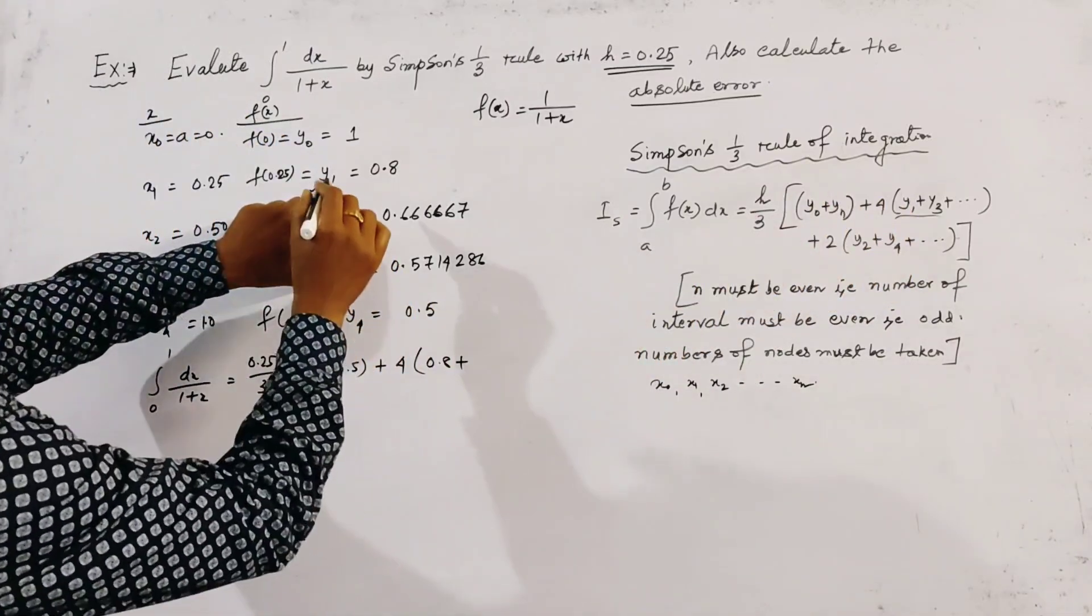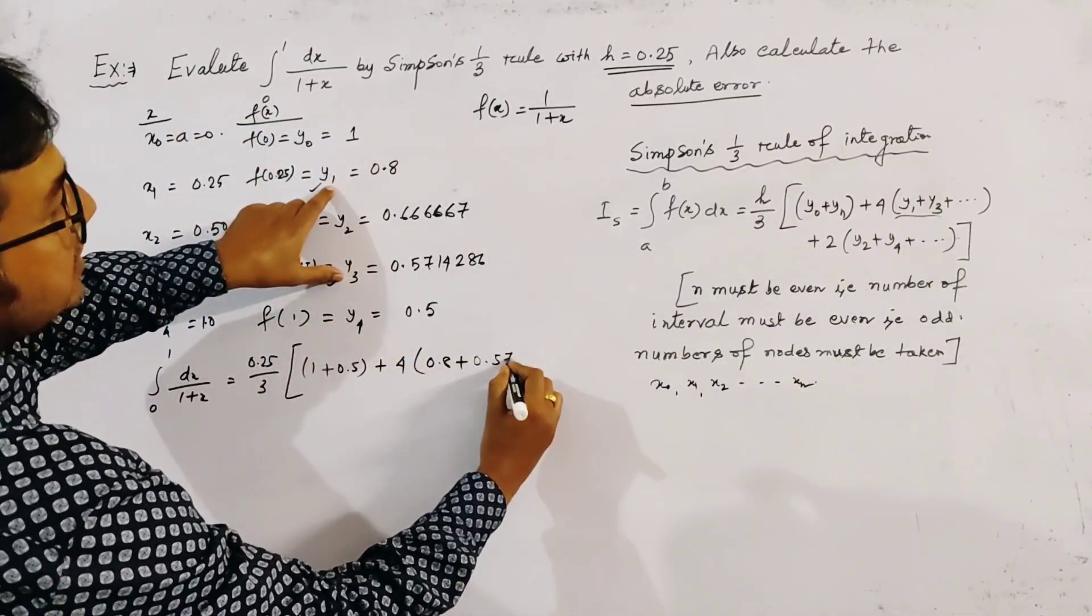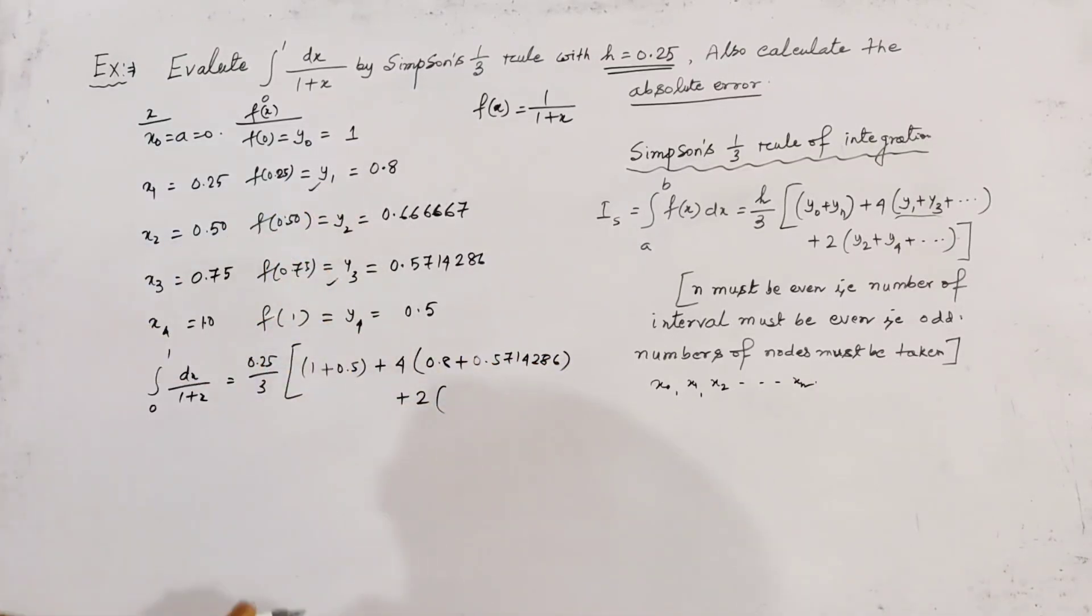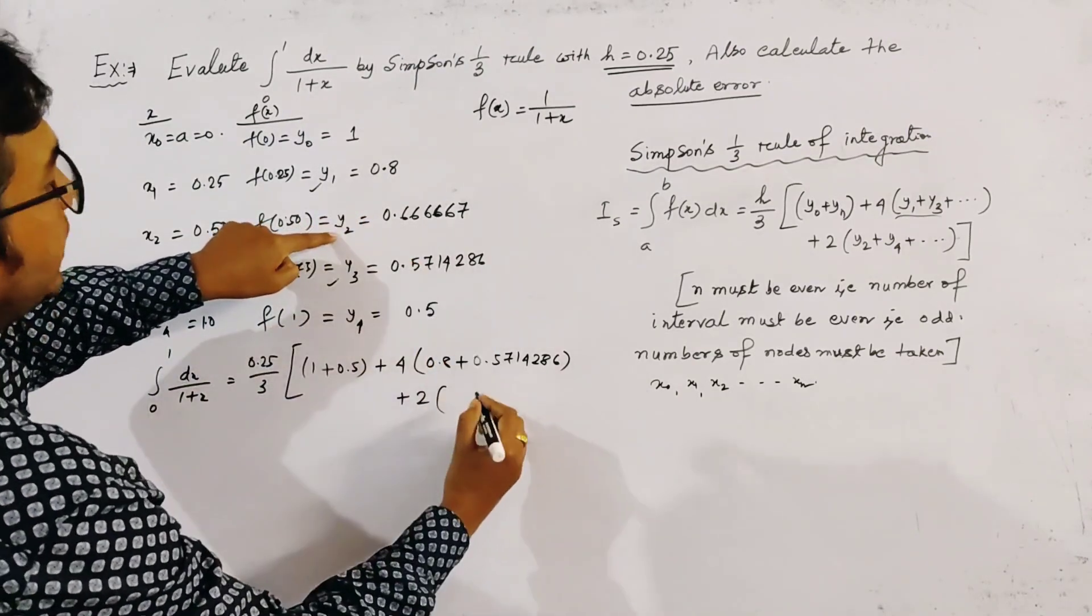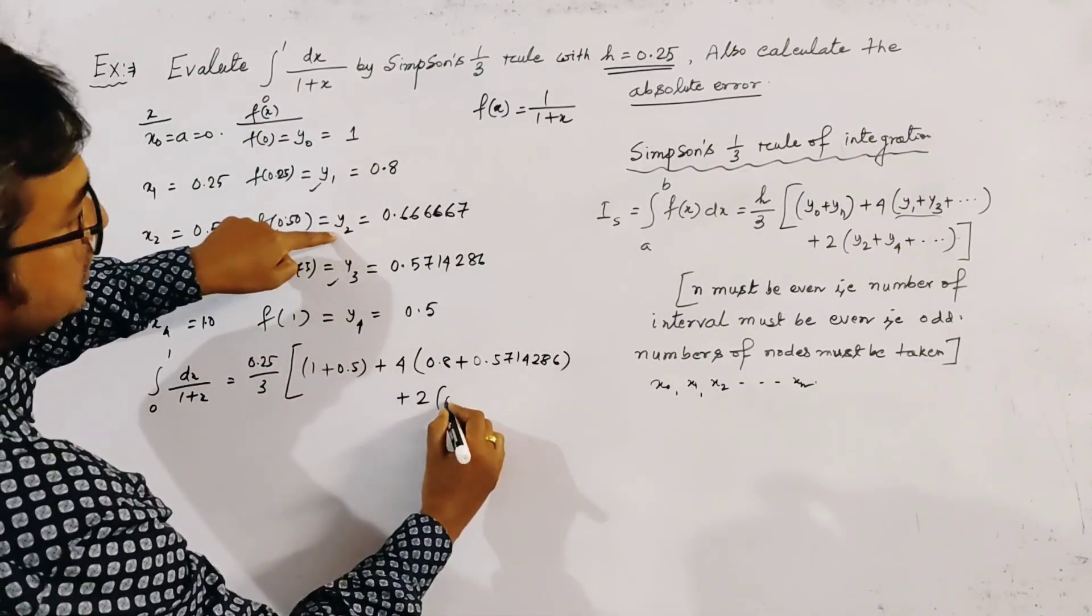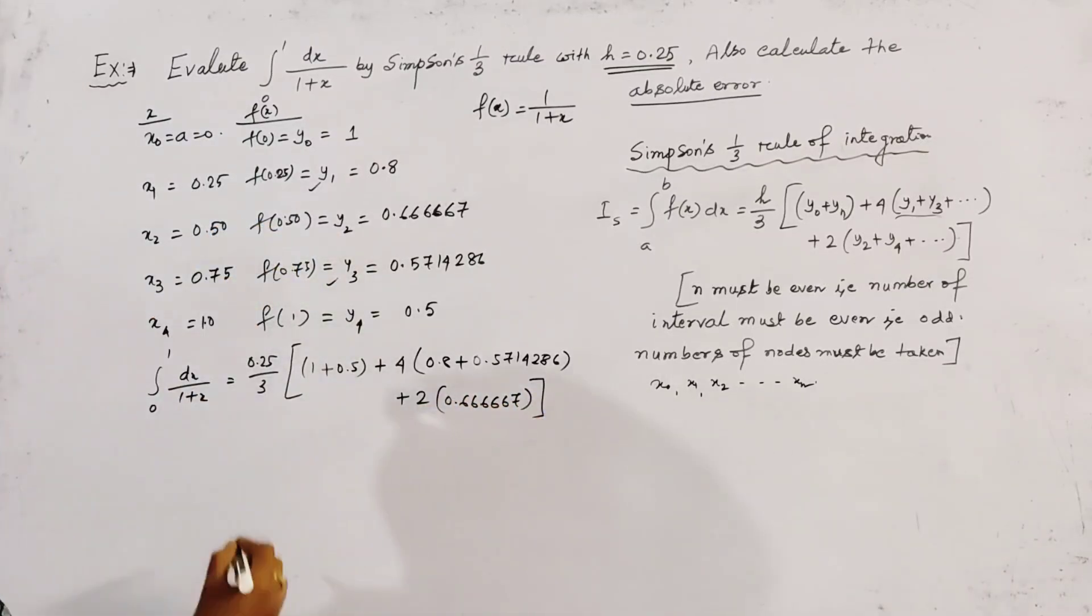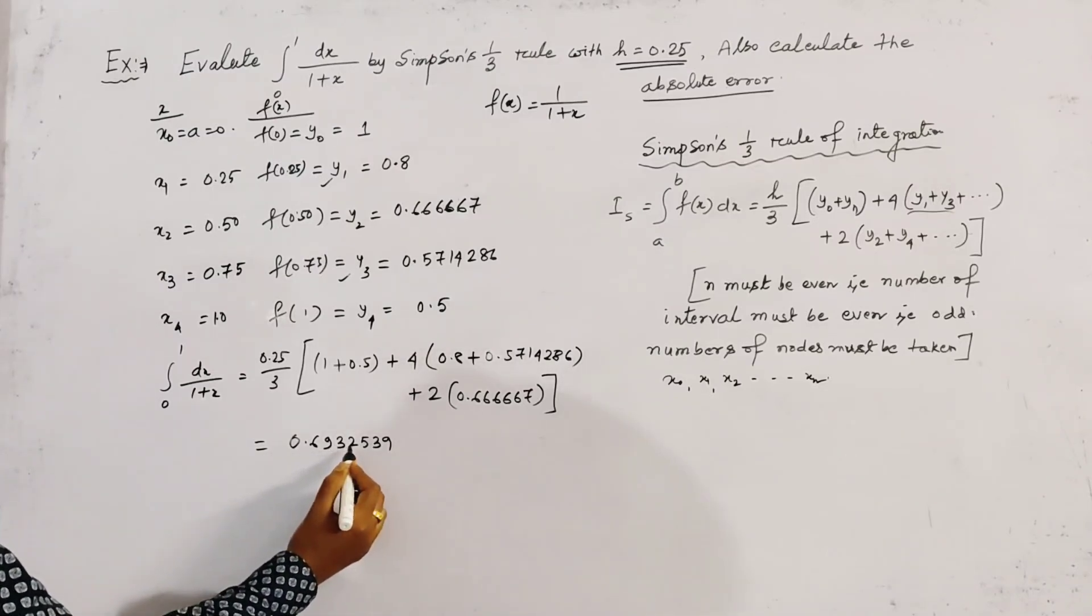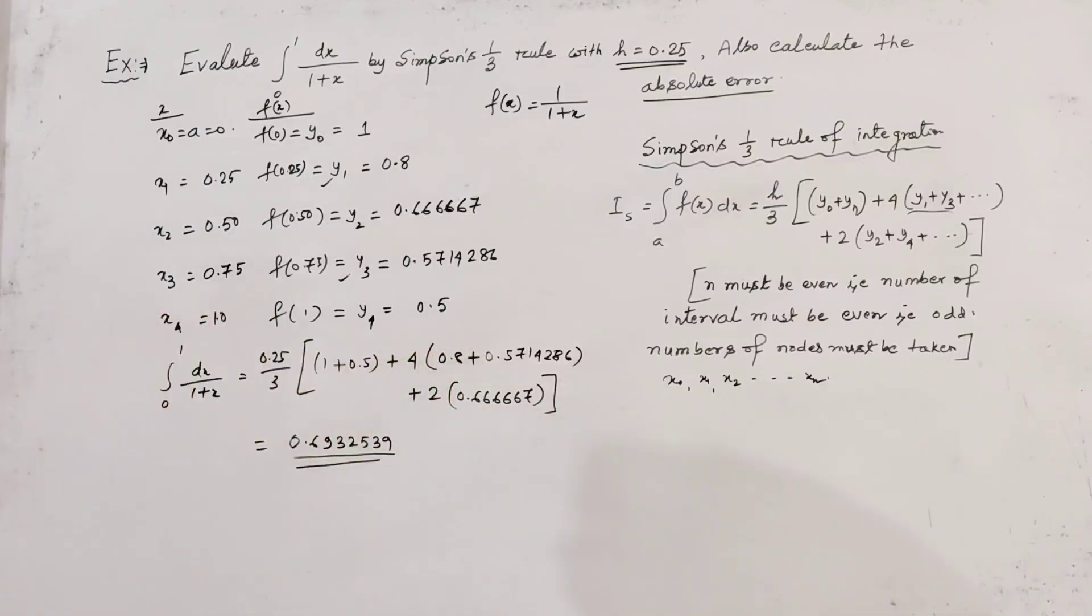y₁ plus y₃ (the odd positions) is 0.5714286, and 2 times the coordinate in the even position, that is y₂—so 2 times 0.666667. Now we get the value: this equals 0.6932539. We write this result from Simpson's one-third rule directly.